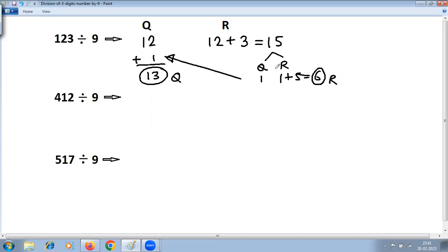Now to check whether this answer is correct, you have to do this: quotient multiplied by 9 (because you are dividing by 9) plus remainder should give you this number. In this case, quotient is 13 multiplied by 9 plus remainder 6.